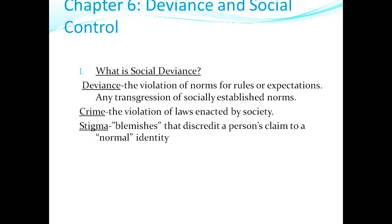Crime is a violation of laws enacted by society. You can commit a deviant act without necessarily committing a crime. A stigma is a blemish — it discredits a person's claim to a normal identity. For the exam, make sure you're familiar with these definitions. For example, a question might ask: 'The violation of norms or rules — is that a crime, a stigma, or deviance?'